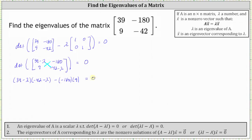Multiplying and simplifying the left side: 39 times negative 42 equals negative 1638. Then we have minus 39 lambda plus 42 lambda, which gives us plus 3 lambda, plus lambda squared. Minus negative 180 times 9 gives us plus 1620.